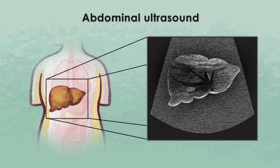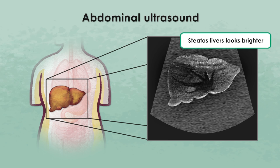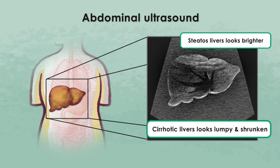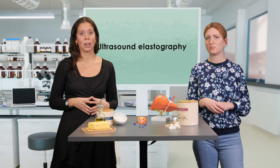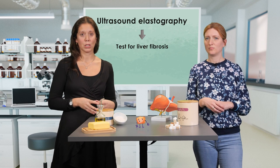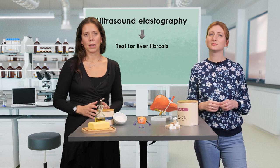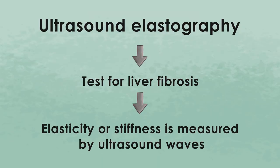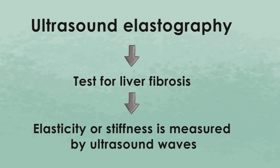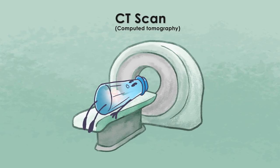On ultrasound images, steatotic livers look brighter than normal livers, and cirrhotic livers look lumpy and shrunken. Ultrasound elastography is a special ultrasound technique to test for liver fibrosis. The movement of the liver caused by ultrasound waves is measured in the middle of the liver, and its elasticity or stiffness is then calculated.